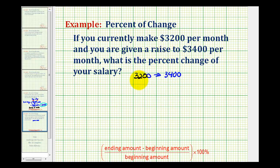It is important that we keep this straight, so this is the beginning amount and this is the ending amount. So to determine the percent of change, we're going to have the ending amount minus the beginning amount.